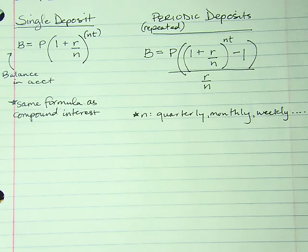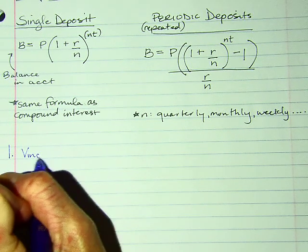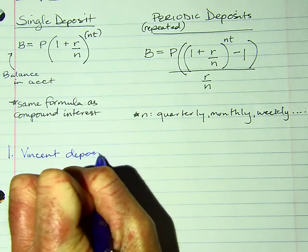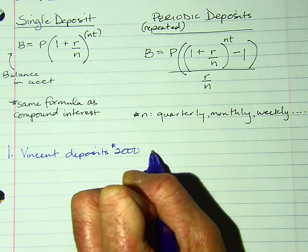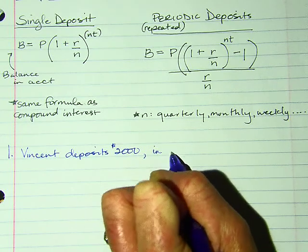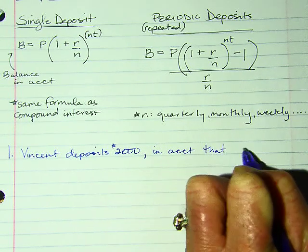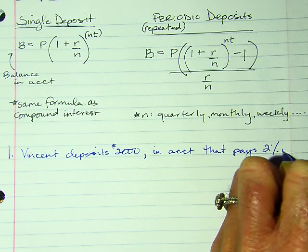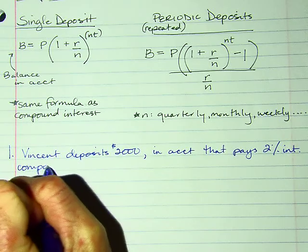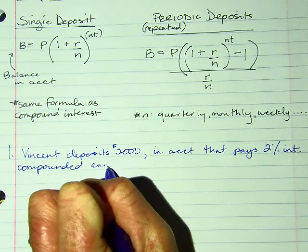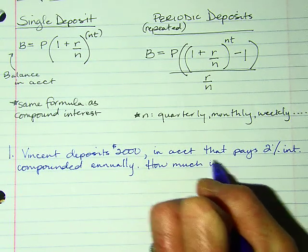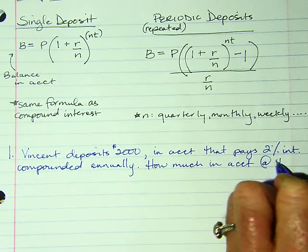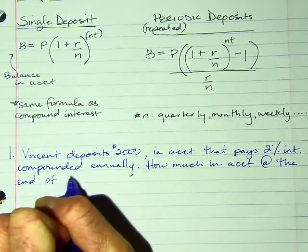Let's jump right in. Number one: Vincent deposits $2,000 in an account that pays 2% interest compounded annually. How much is in the account at the end of five years?